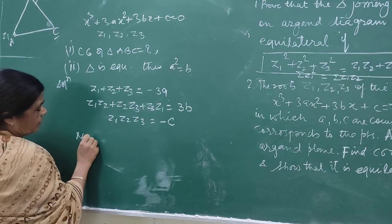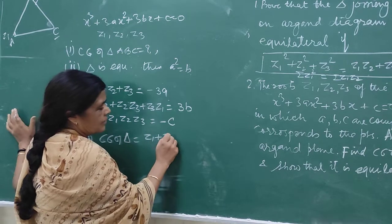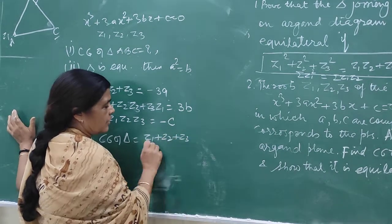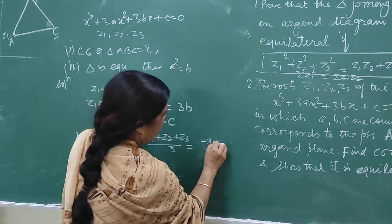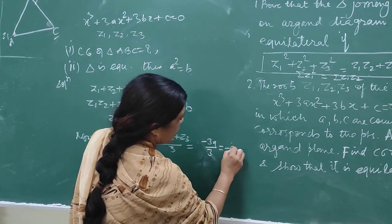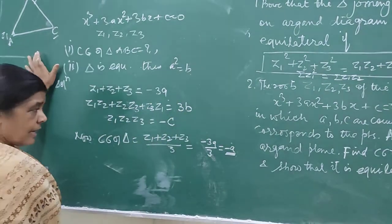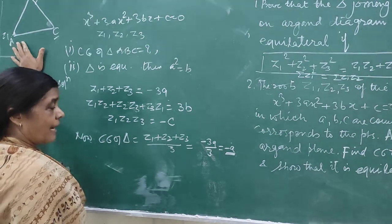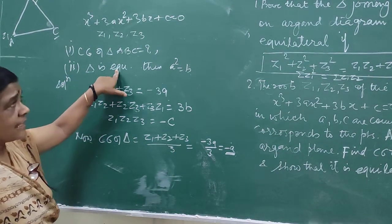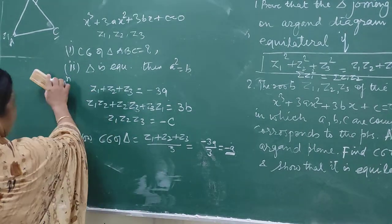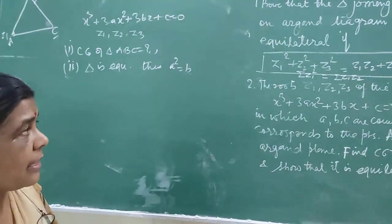The centroid of triangle ABC is (Z1 plus Z2 plus Z3) over 3, which equals minus 3a over 3, that is minus a. Here a is a complex number on the Argand plane. So the centroid of the triangle is minus a. Now for the second condition, a triangle is equilateral if a² equals b.